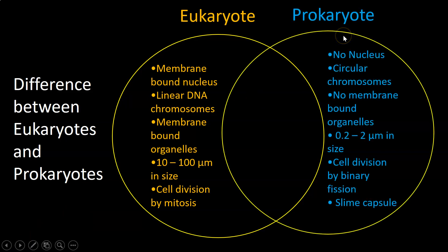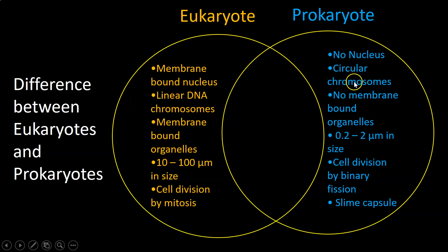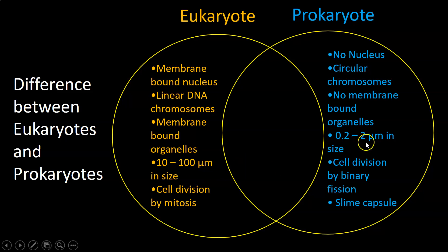For prokaryotes: there is no distinctive nucleus; there is a chromosome but it's usually just one — a single circular chromosome, whereas in humans or any animal there are multiple chromosomes; there are no membrane-bound organelles; and cells are an order of two smaller than eukaryotic cells, so we're comparing say 100 micrometers down to 0.2 micrometers.